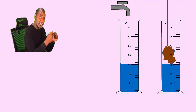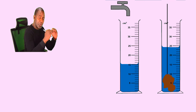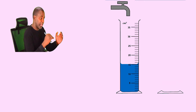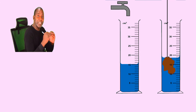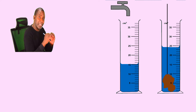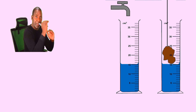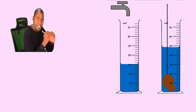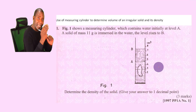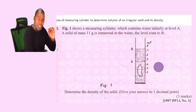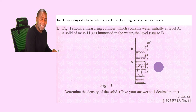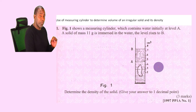We tie the solid with a piece of thread and immerse it gently in the measuring cylinder. The water level rises because water is incompressible — when a solid enters the liquid, the water must give space whose volume equals the space occupied by the solid. The volume of the water displaced is exactly equal to the volume of the irregular solid inside.